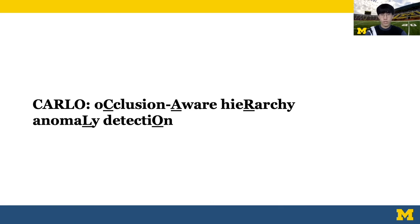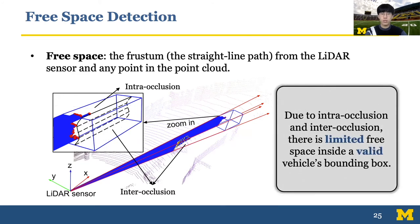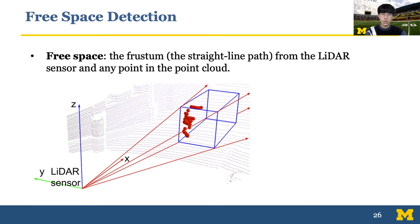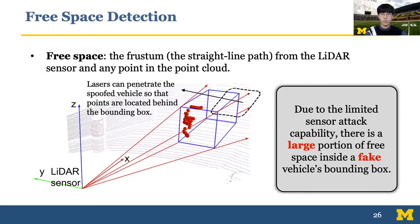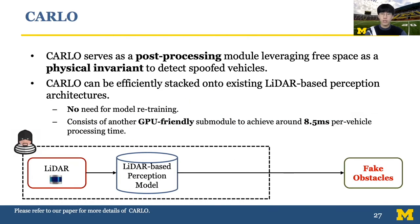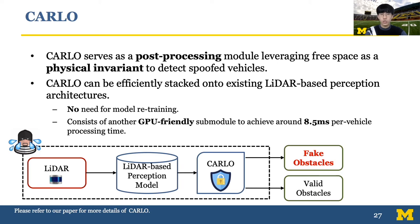Now I will introduce our first defense strategy, CARLO: occlusion-aware hierarchical anomaly detection. The key idea of CARLO is to leverage a concept called free space in the LiDAR point cloud. We define free space as a frustum from the LiDAR sensor at any point in the LiDAR point cloud. The blue space in the figure represents free space. Since a closer obstacle's facing surface occludes LiDAR beams, there is very limited free space inside a real vehicle's bounding box. However, for a spoofed vehicle's bounding box, LiDAR beams can penetrate it, resulting in a large portion of free space inside the fake vehicle's bounding box. CARLO leverages this significant difference in free space between valid and fake vehicles as a physical invariant to detect spoofed vehicles, and can be efficiently stacked onto existing LiDAR-based perception models without retraining. We also designed a GPU-friendly submodule to accelerate CARLO's processing time.